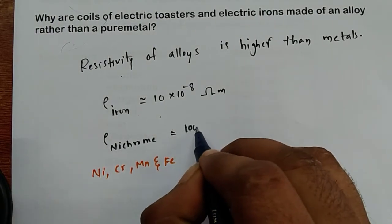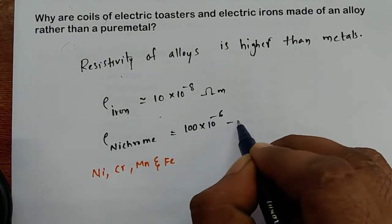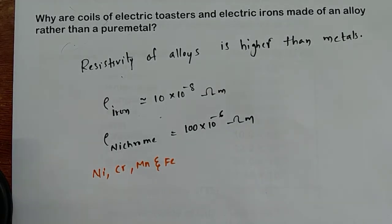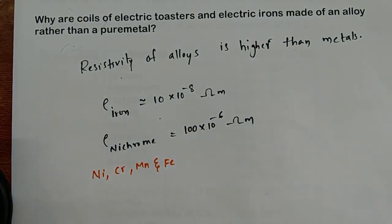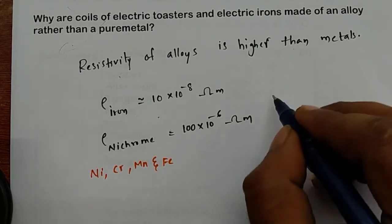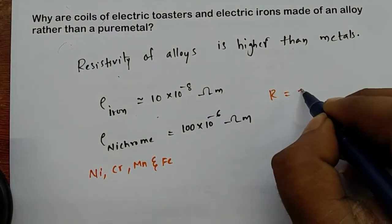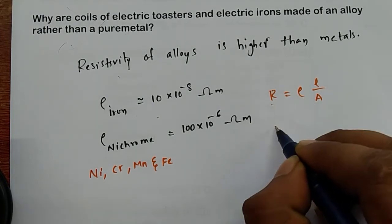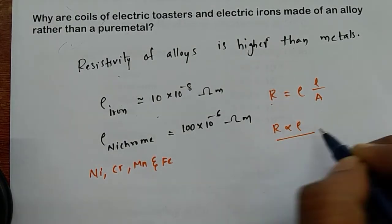Why is resistivity important? Because resistance depends upon resistivity. The resistance is equal to ρL/A, so resistance is directly proportional to resistivity.